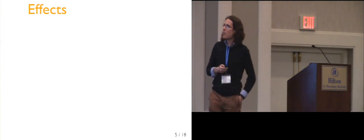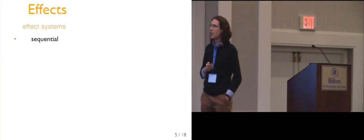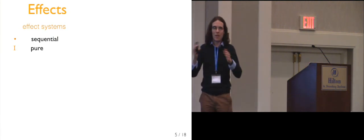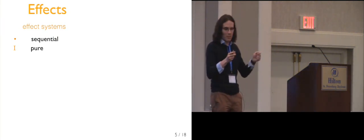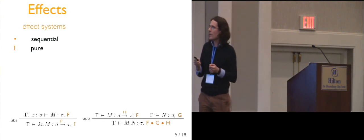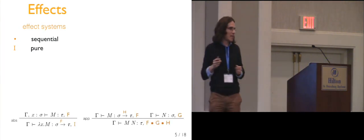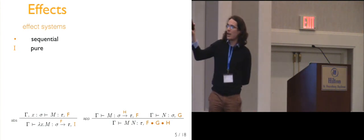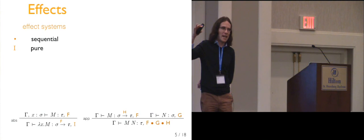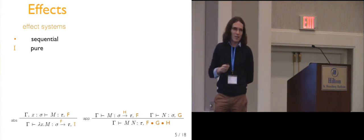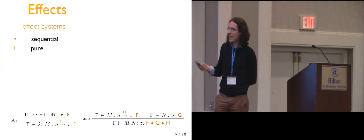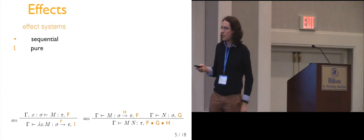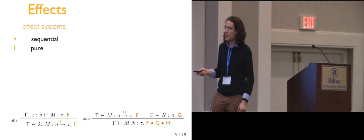A very brief reminder about effect systems. We have a monoidal structure that describes how effects are composed sequentially. For just the lambda calculus, if we've got an expression M with effects F and a free variable X, and we abstract on that variable, then we encapsulate all those effects — they're latent, waiting to come out when we apply the function. The function itself is pure, so it's marked with I.